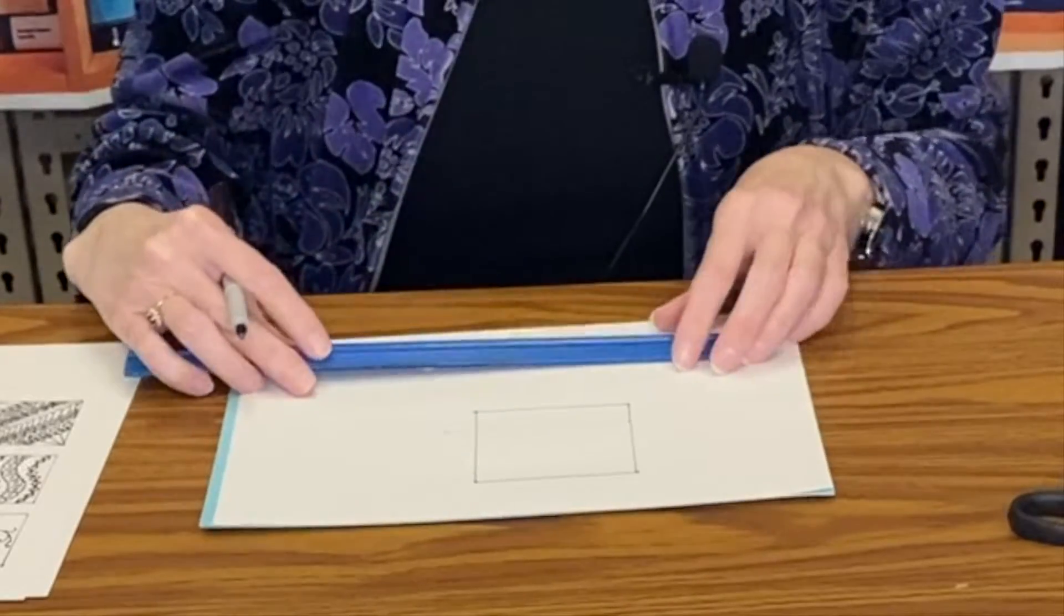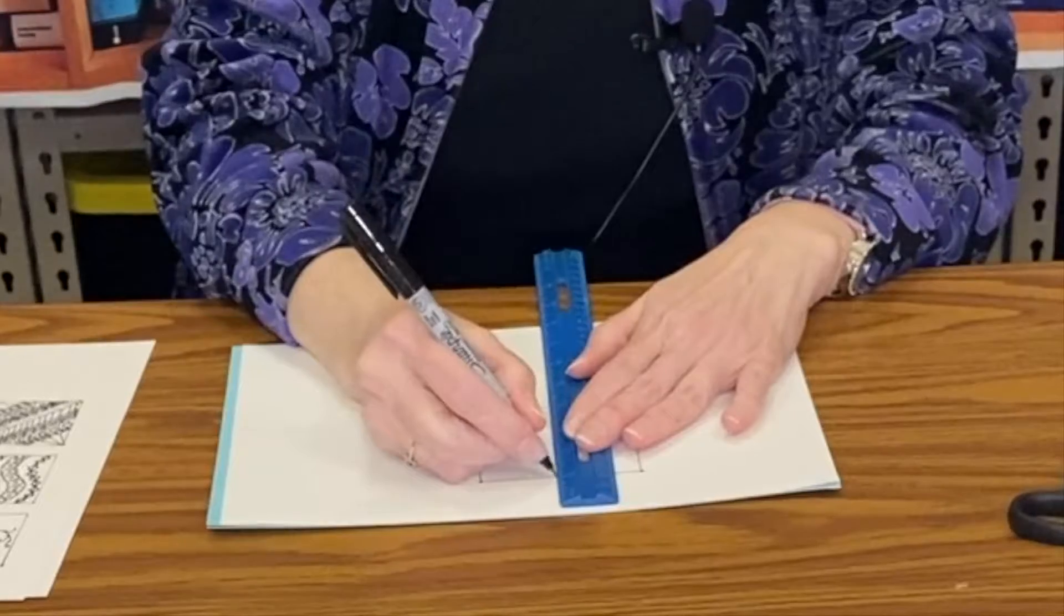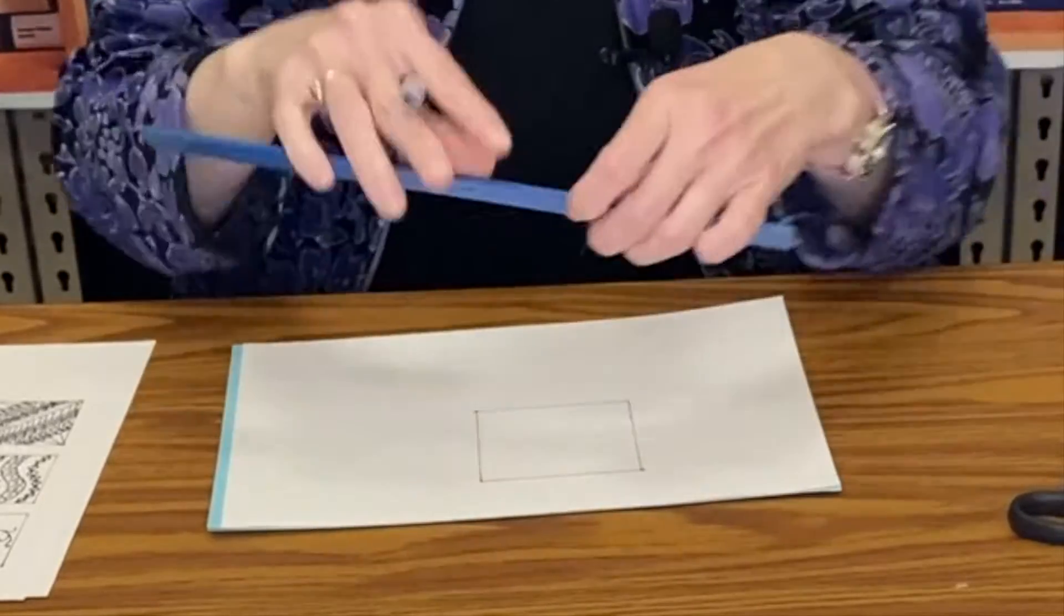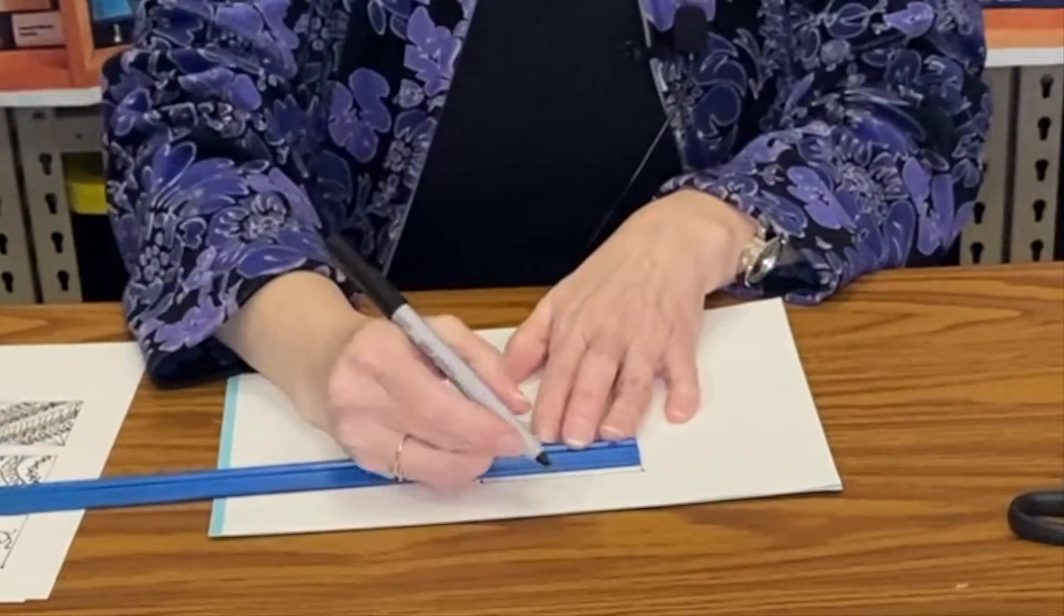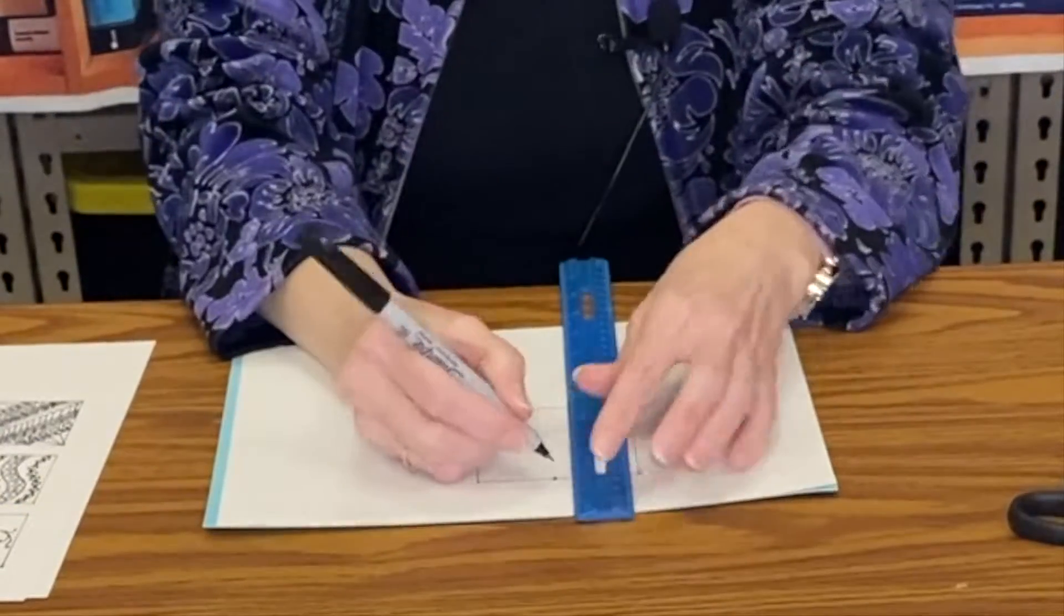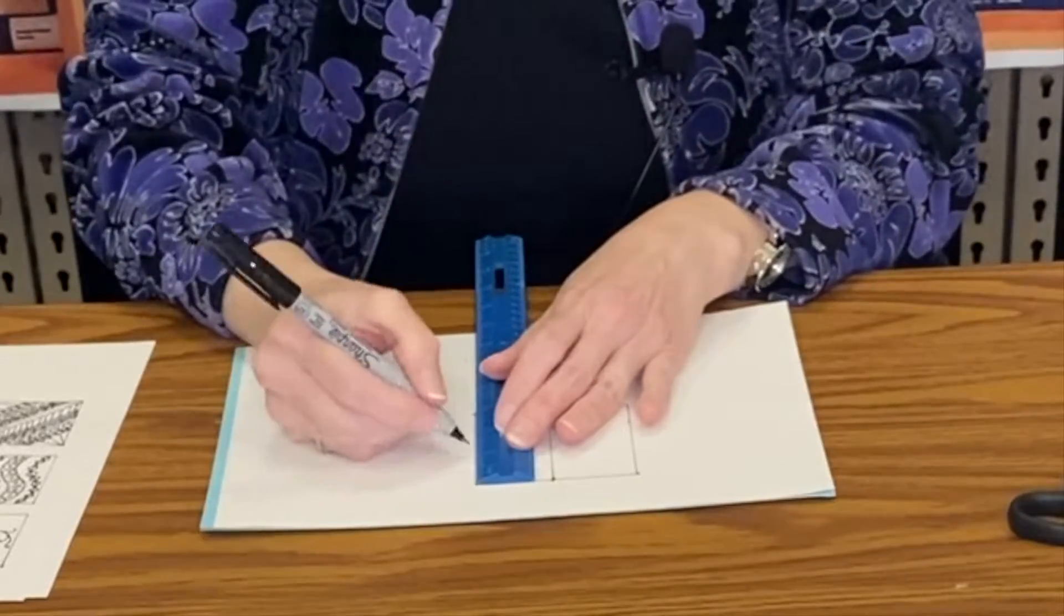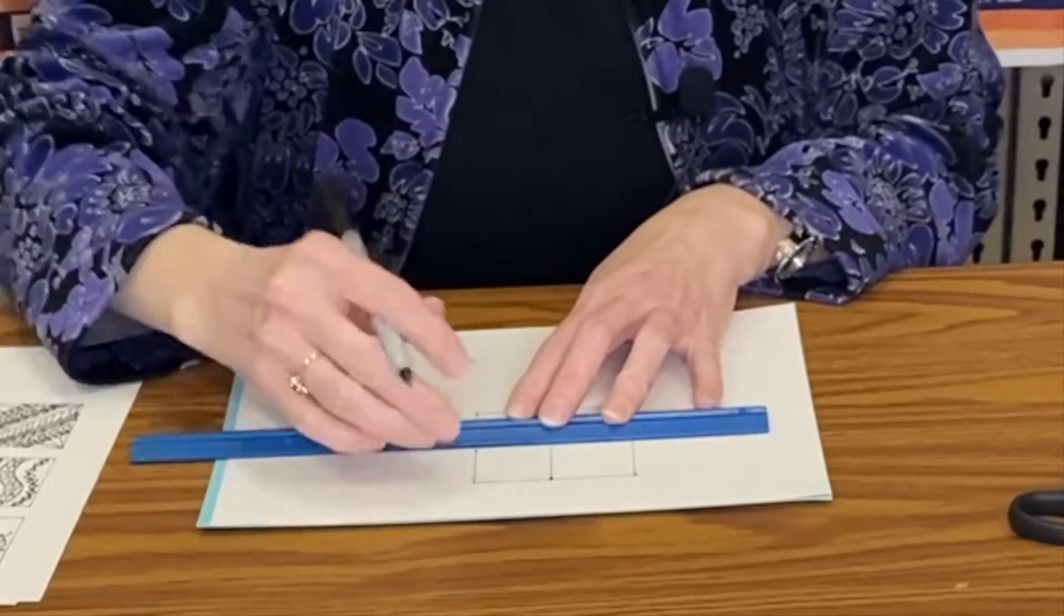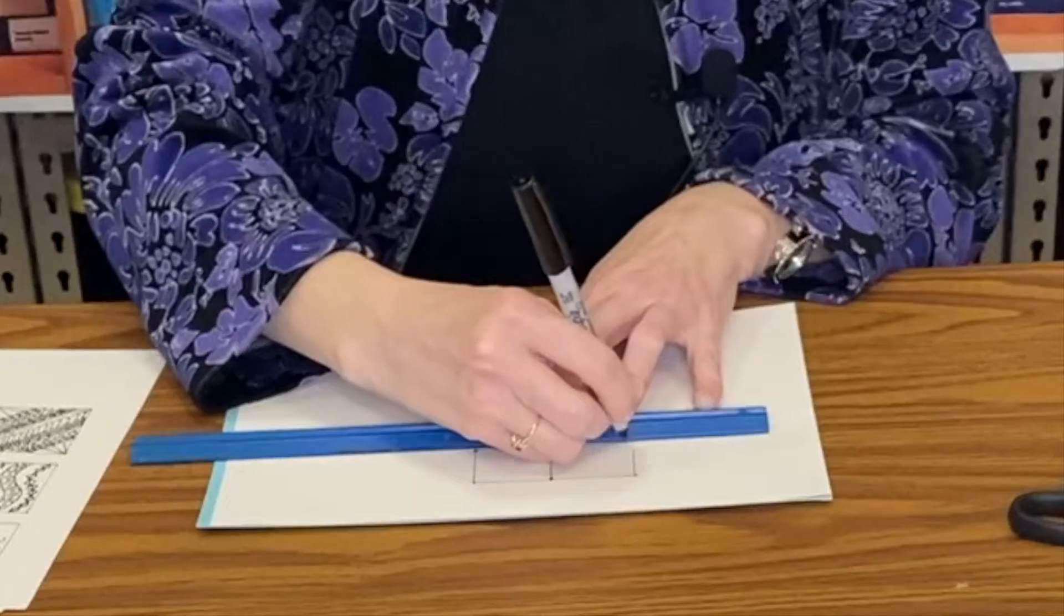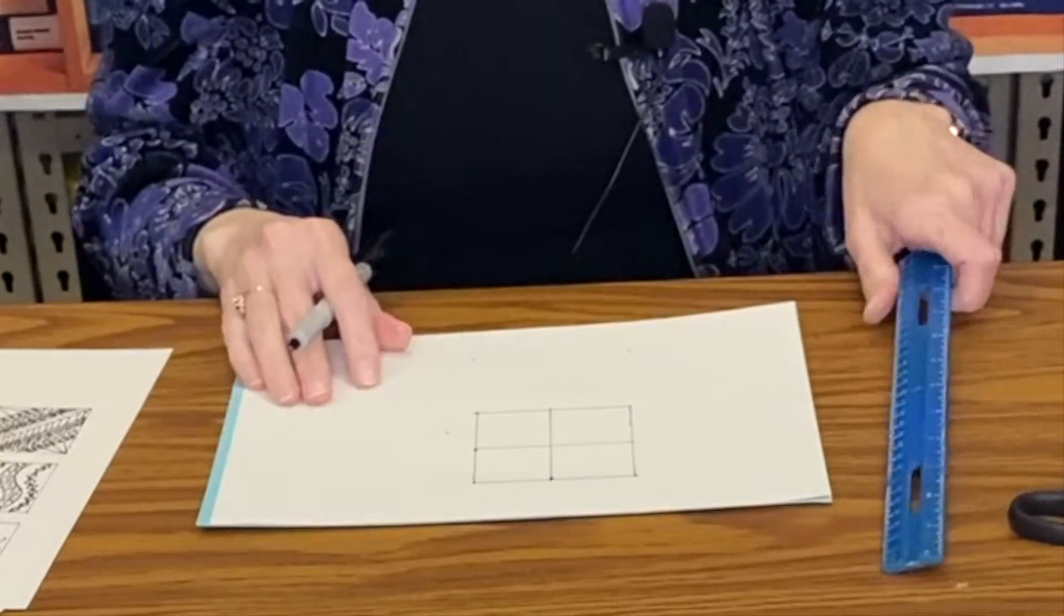So I'm going to measure an inch and a half in for the halfway mark, and that's going to create four sections and we'll just make four different patterns.